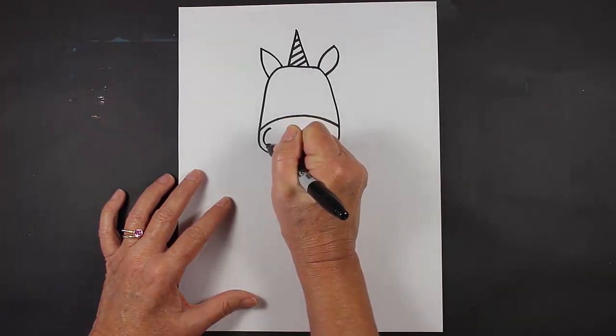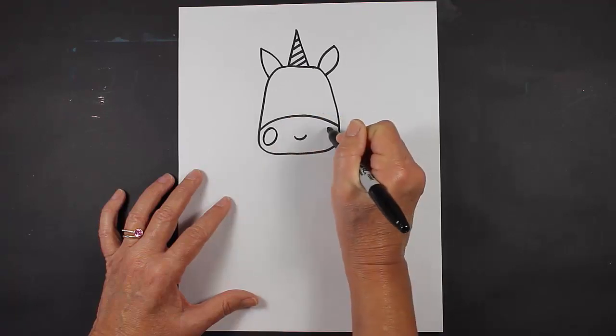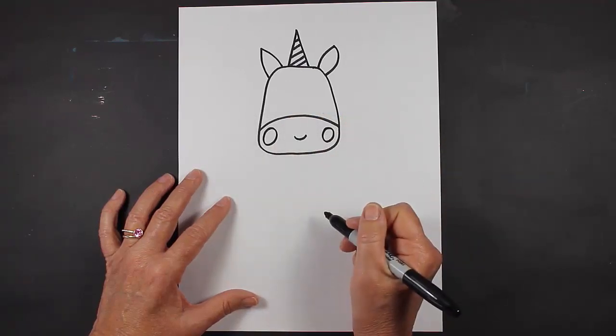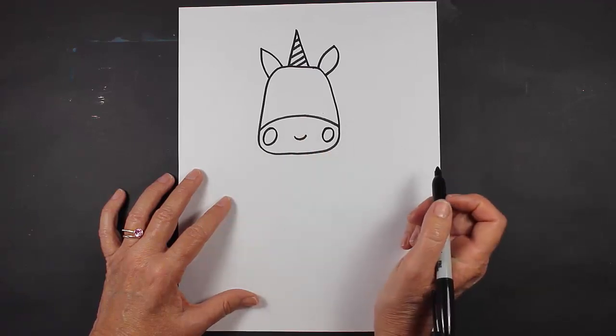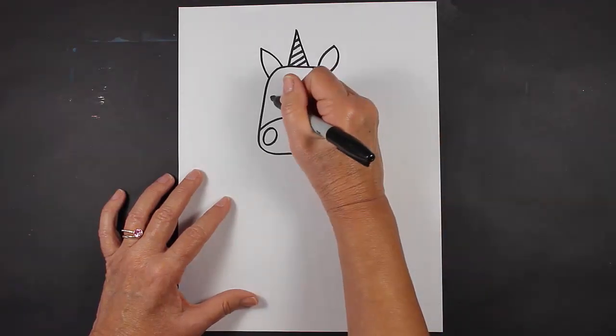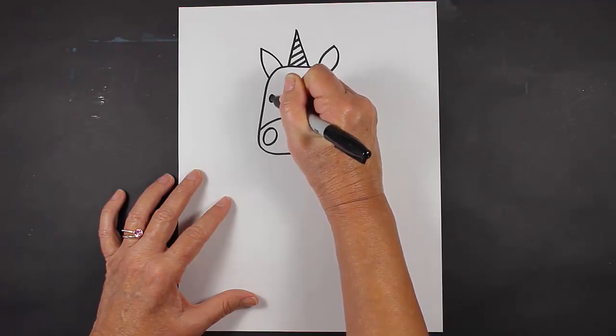I always like to make little cheeks on my unicorn. You can color those in with a little bit of pink if you'd like. You don't want to put the cheeks on there? That's okay too. Let's make some wide-set eyes.